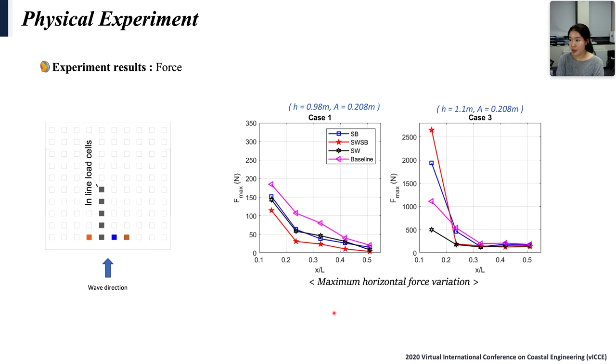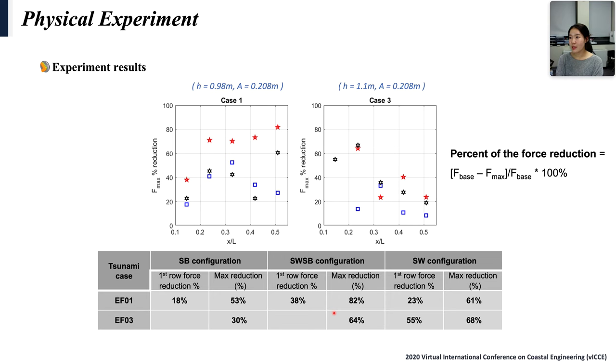And this is the percent reduction in tsunami force in first building row and maximum reduction. In case 3, the trend seen in case 1 did not appear because of slamming.